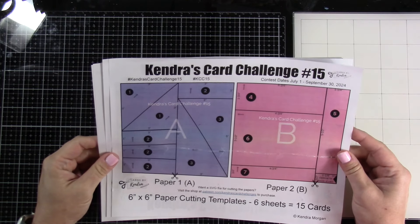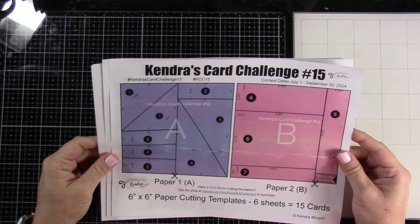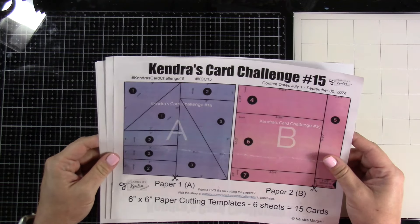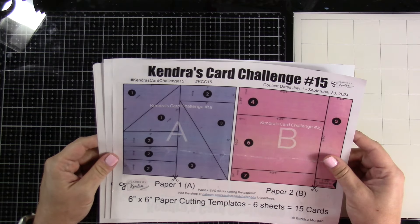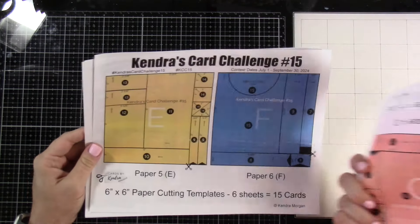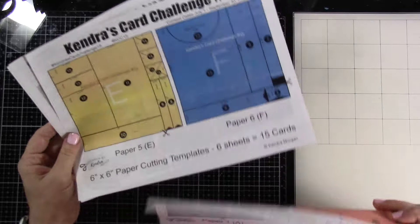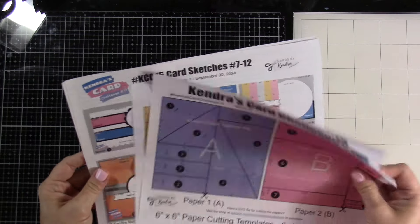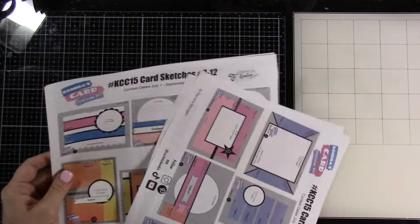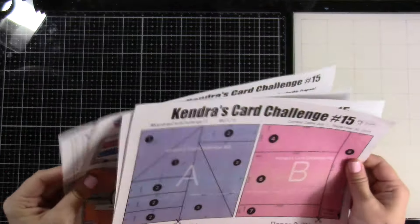The contest dates are July 1st through September 30th. I love these challenges because you just take six by six patterned papers, and you can cut those up the way she has them all diagrammed. And you get 15 cards in the end because she also provides all of the sketches. They're fabulous. I love to play along with these.